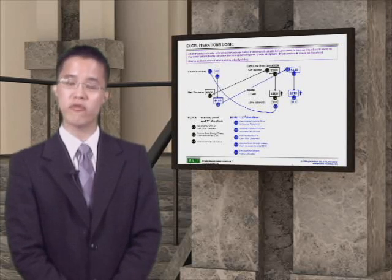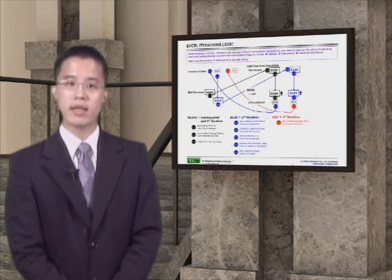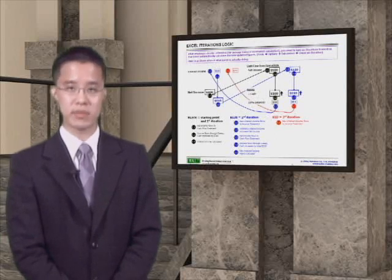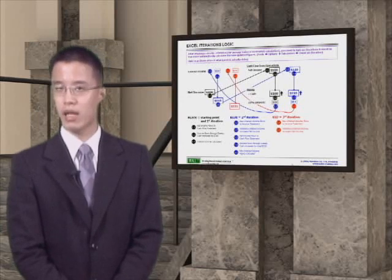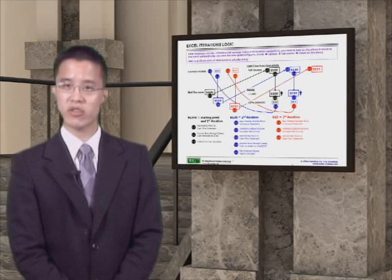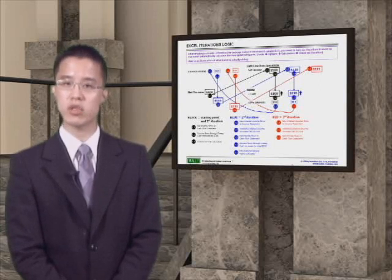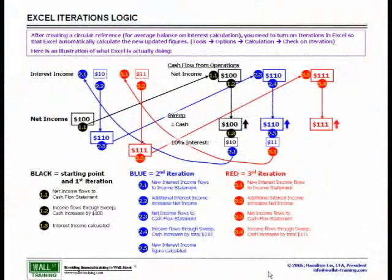This $11 is the beginning point of our third iteration, now in red. It flows back to the income statement to get a new net income of $111. This $111 again flows back to our cash flow from operations, meaning we have a total increase in cash of $111.